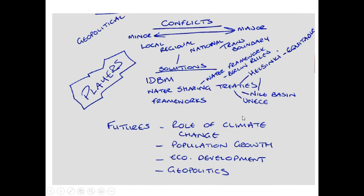This links us to the geopolitics of water conflicts. It's important to realise conflicts are on a sliding scale, from minor conflicts with easy resolutions to major conflicts that may lead to war. Conflicts exist at different scales — local, regional, and transboundary between countries. Key areas include the Nile Basin conflicts, conflicts between India and Bangladesh, and disputes within Europe. Solutions include integrated drainage basin management schemes and water-sharing treaties such as the Berlin Rules, the Helsinki Rules on equitable use and sovereignty of water, the Nile Basin River Agreement, and the UN European Convention for Water.